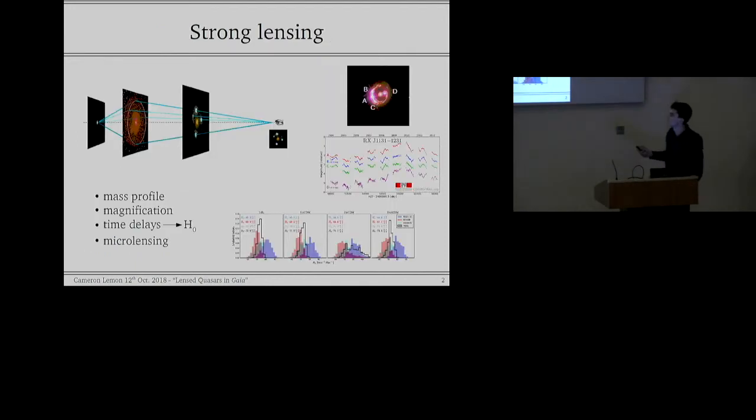So firstly, why do we want to know anything about lensed quasars and why do we want to know about more of them? If you imagine a background source quasar, almost perfectly aligned along the line of sight to the observer with a massive foreground galaxy, the bending of the light creates four images of this blue quasar or sometimes two images around the red lensing galaxy.